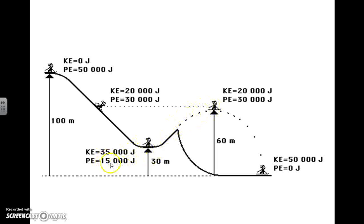They double their potential energy from this point up to this point. It goes from 15,000 to 30,000. And they're slowing down as they go through that jump, at least until they get to the top of it, where kinetic energy has dropped from 35,000 to 20,000 joules.